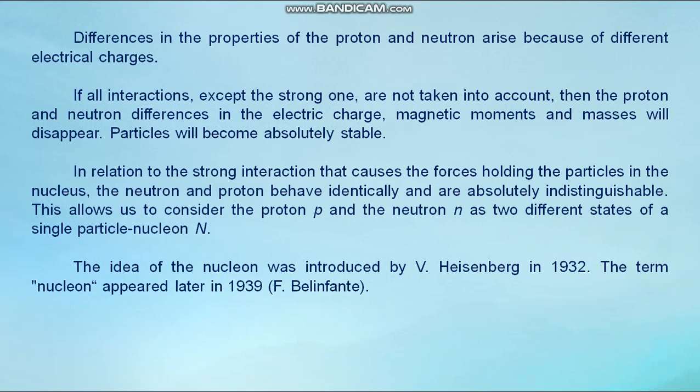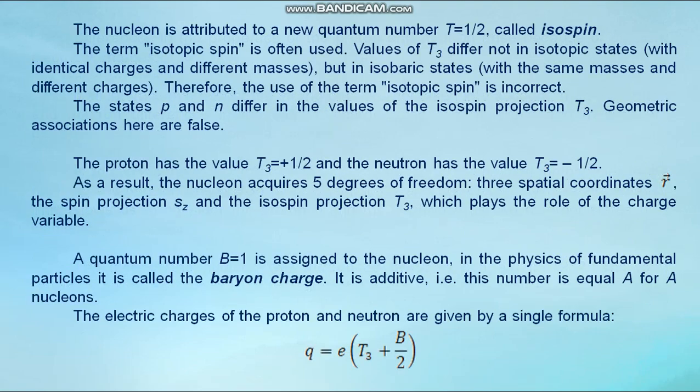The idea of the nucleon was introduced by Heisenberg in 1932. The term nucleon appeared later in 1939 by Belinfante. The nucleon is attributed to a new quantum number T equals one half, called isospin. The term isotopic spin is often used. Values of T₃ differ not in isotopic states with identical charges and different masses, but in isobaric states with the same masses and different charges. Therefore, the use of the term isotopic spin is incorrect. The states p and n differ in the values of the isospin projection T₃. Geometric association here fails. The proton has the value T₃ equals plus one half, and the neutron has the value T₃ equals minus one half.